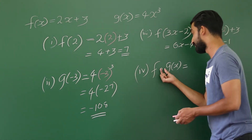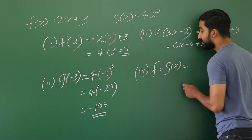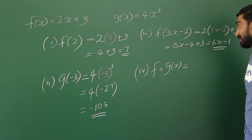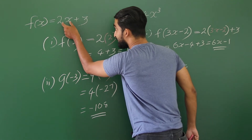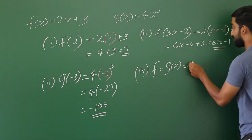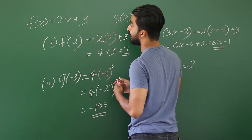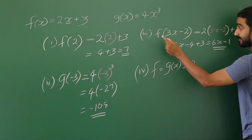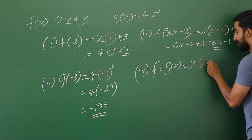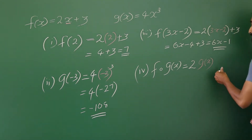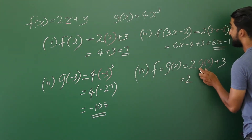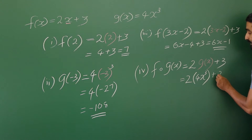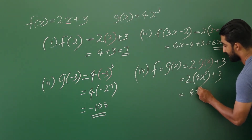Now Roman number 4 is very special. We put a small circle here — that means this g(x) function should be replaced inside f function; we call this functions inside functions. So g(x) should be substituted for x in f(x). f(x) starts with 2, and we meet our x — this x should be replaced by g(x), so we write 2 times g(x) plus 3. Now g(x) is 4x cubed, so we write 2 times 4x cubed plus 3, and we end up having 8x cubed plus 3.